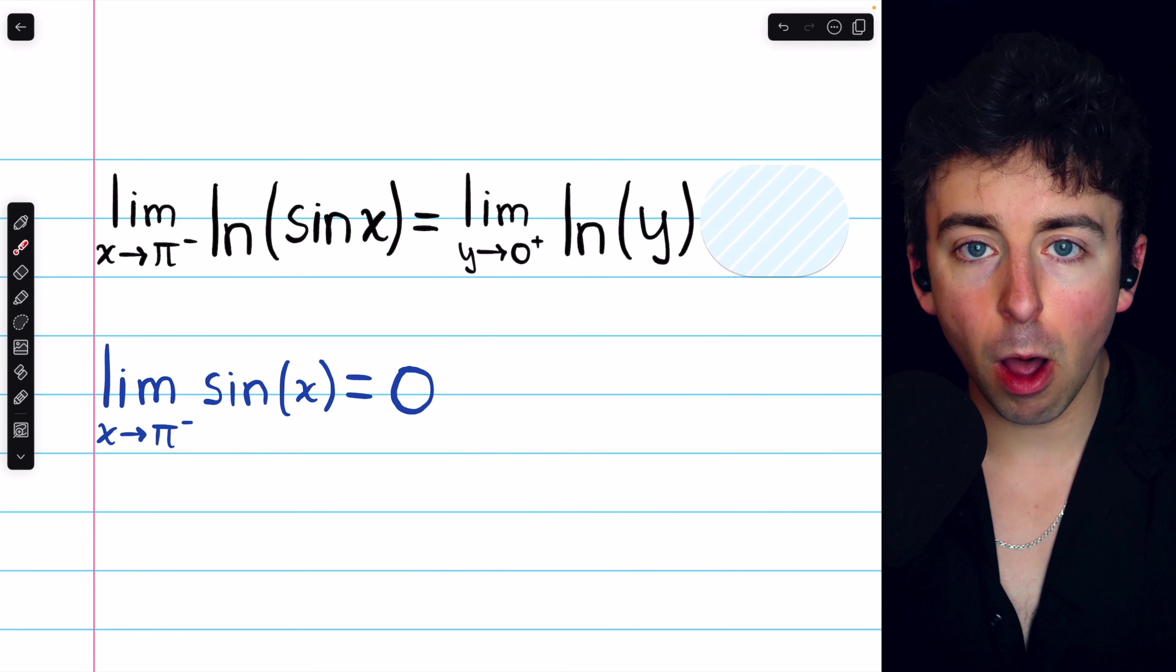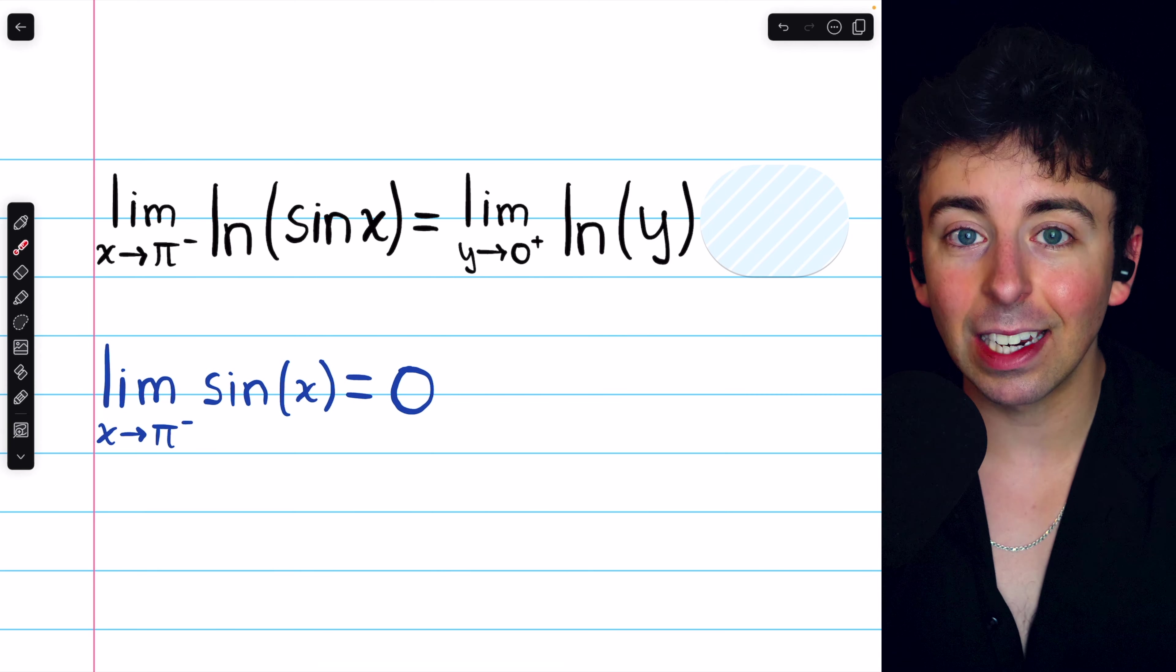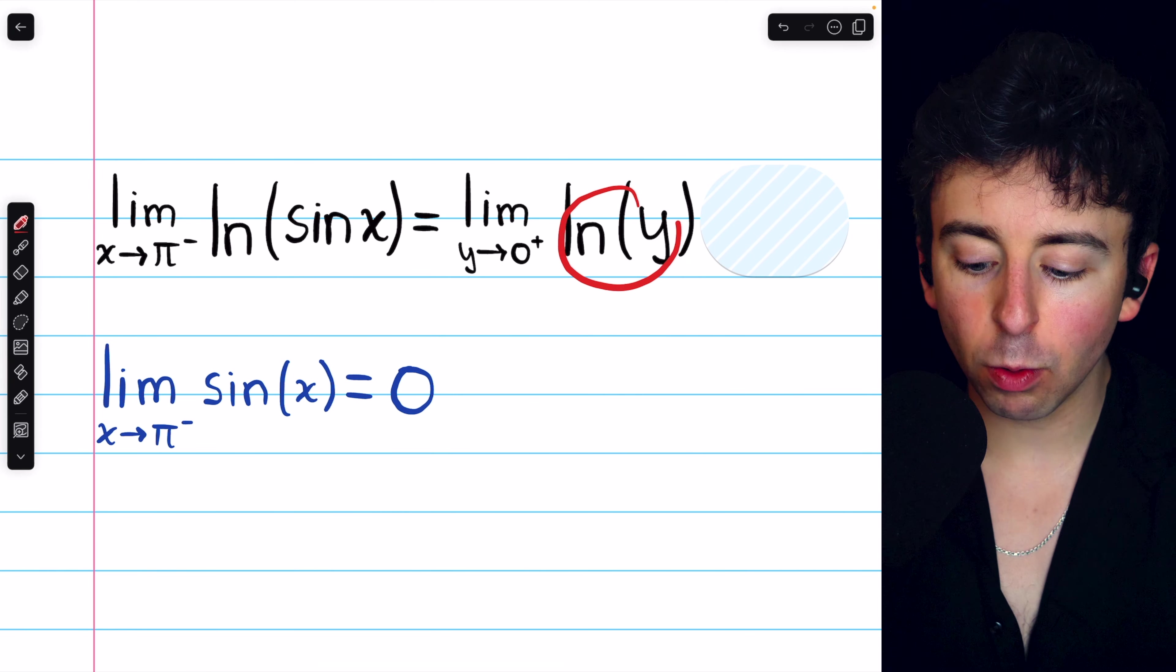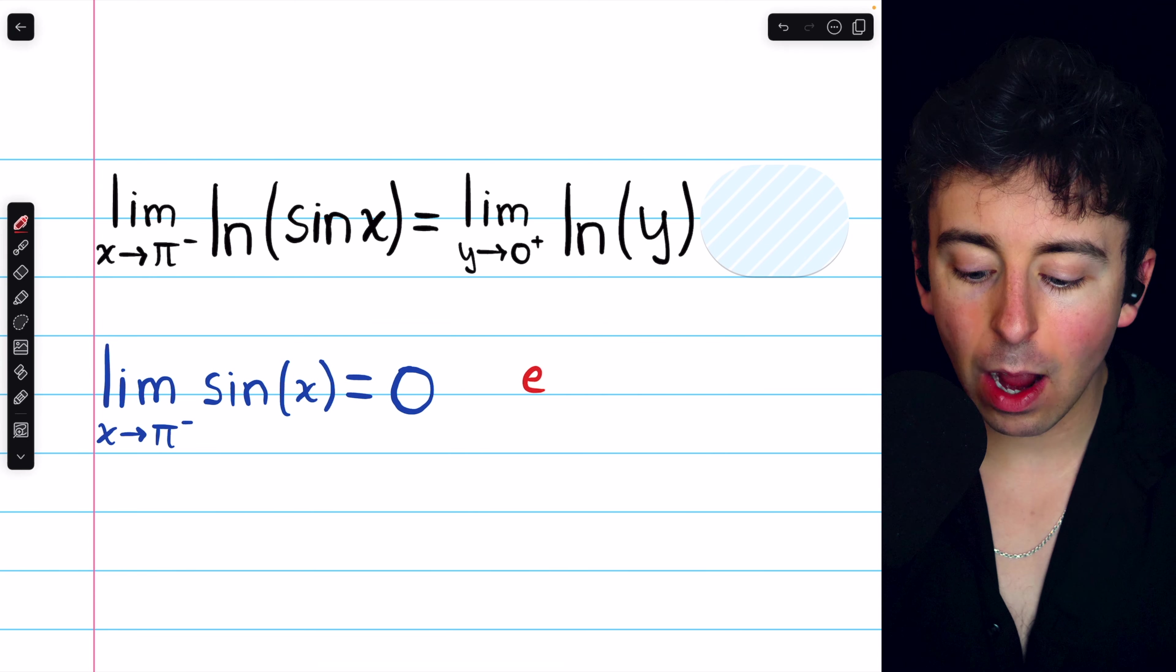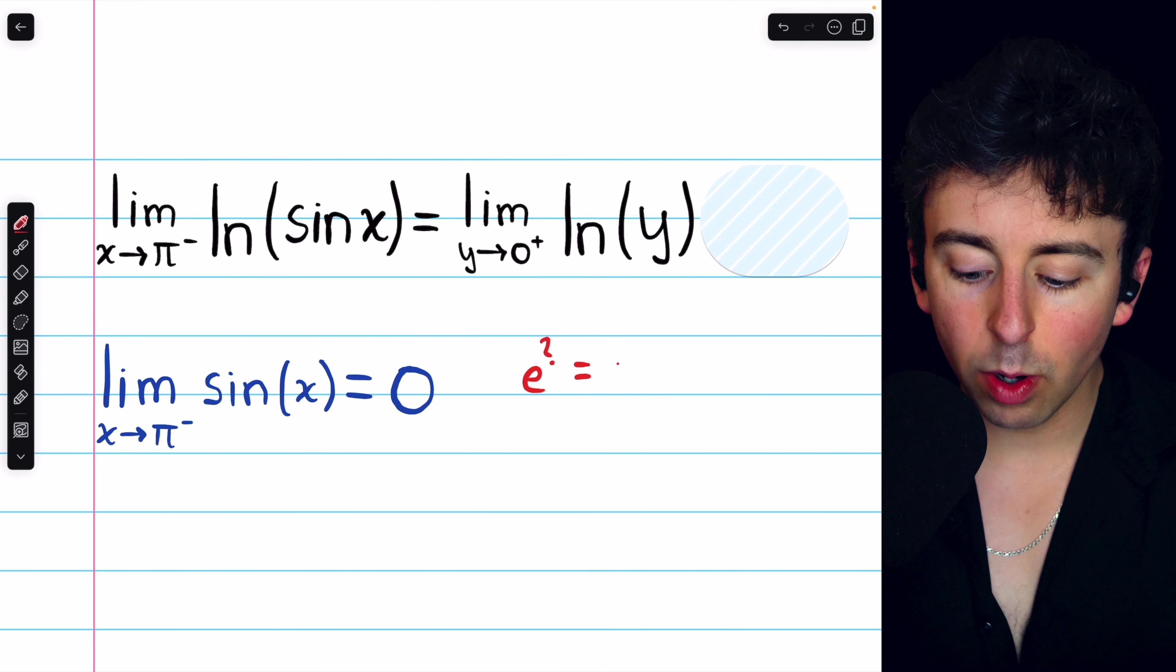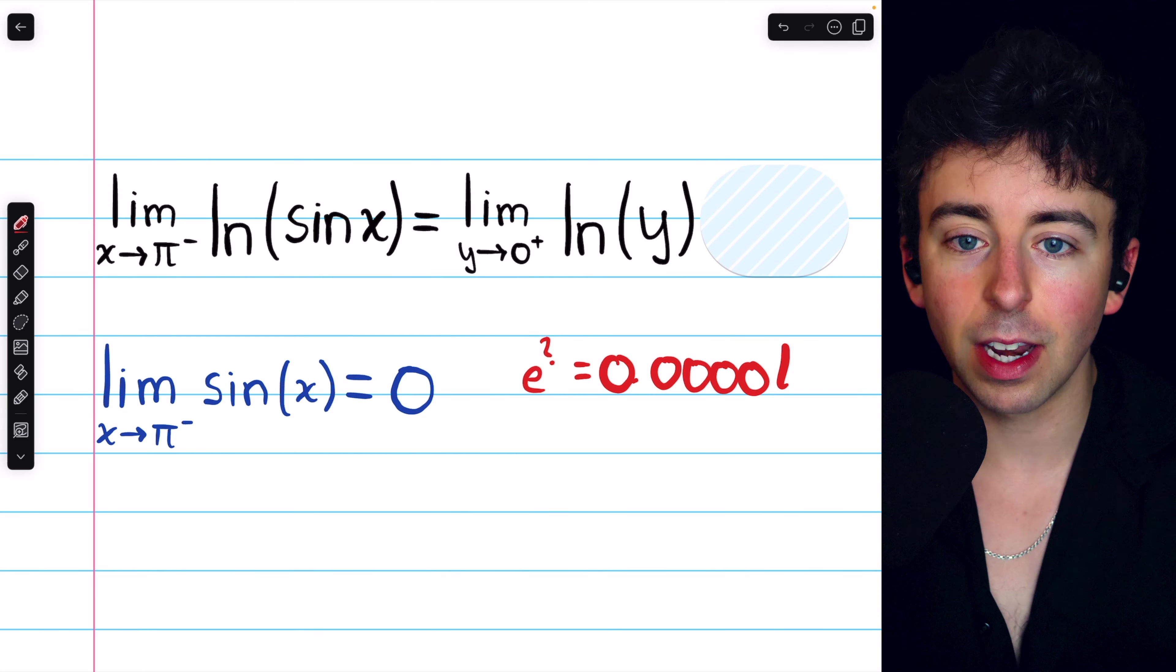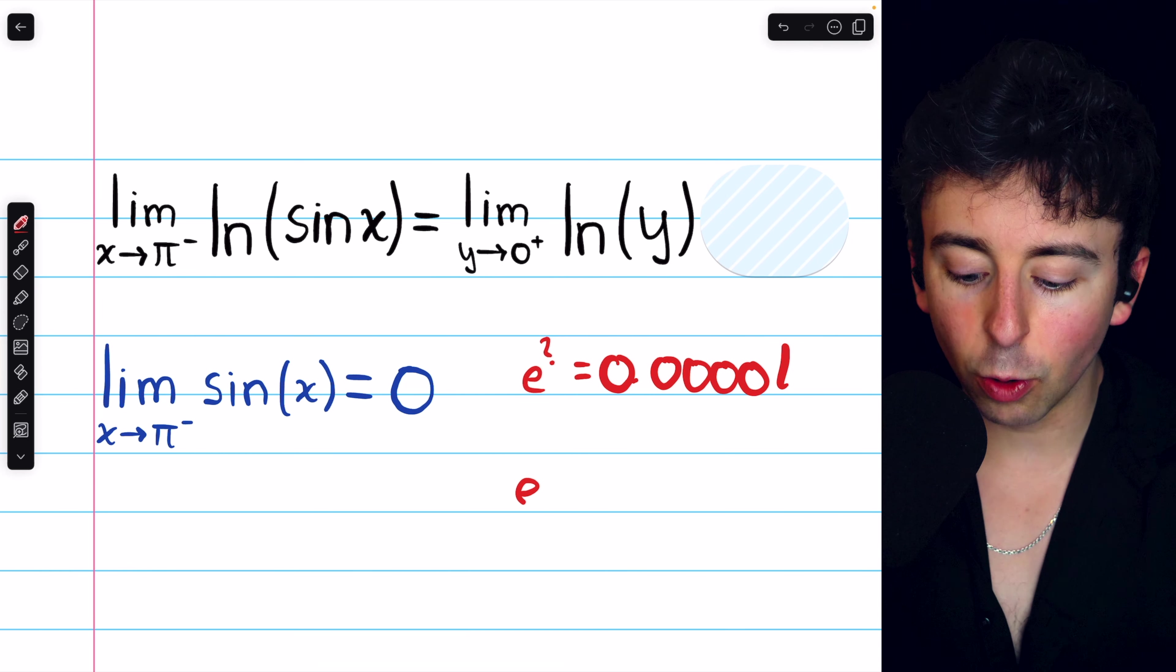And so now we can think about this limit in pretty simple terms. What's the natural log of a really small positive number? And the answer is a really big negative number. Because remember, the natural log of y is the power we need to raise e to to get y.